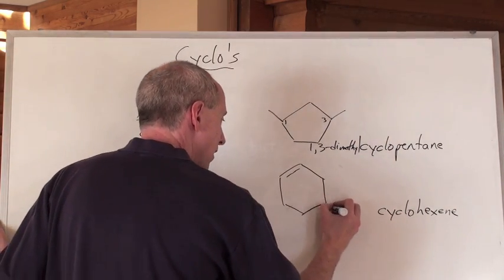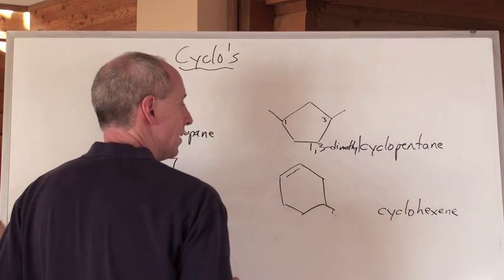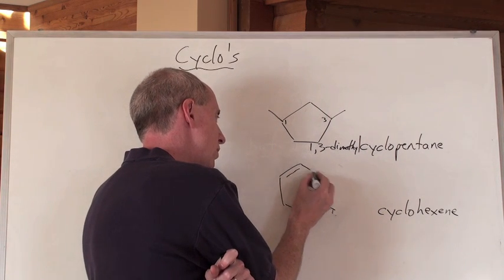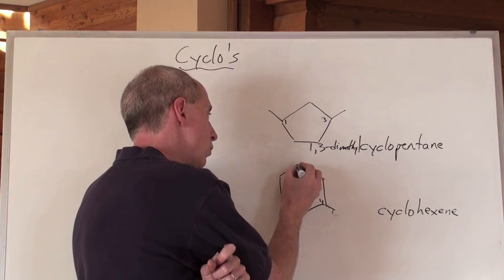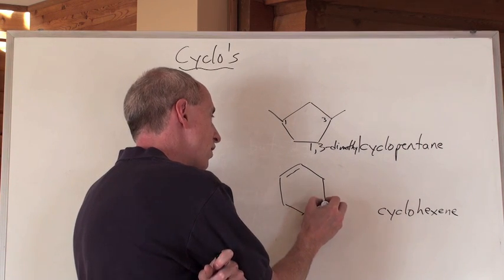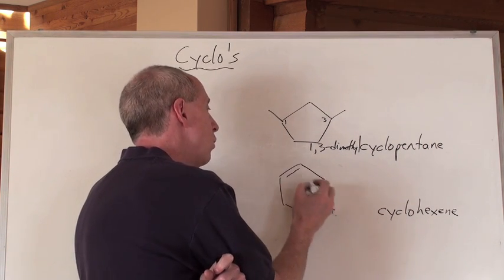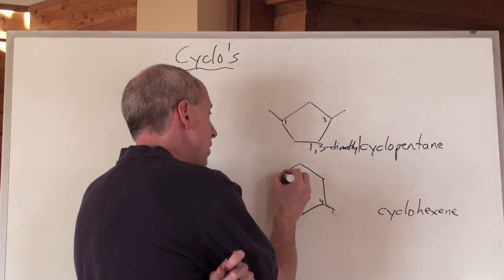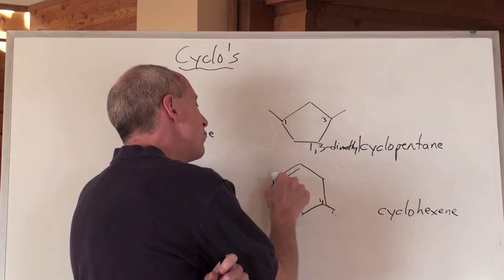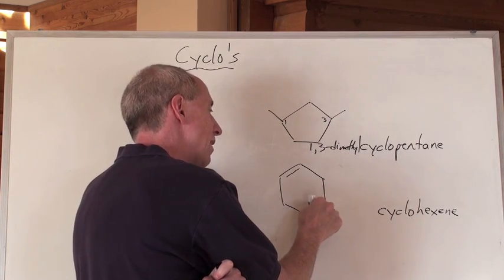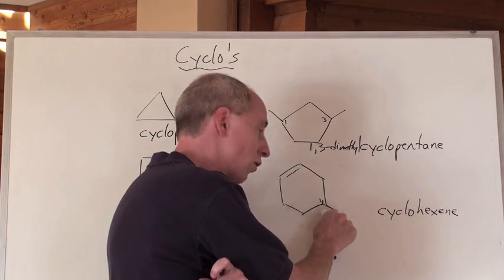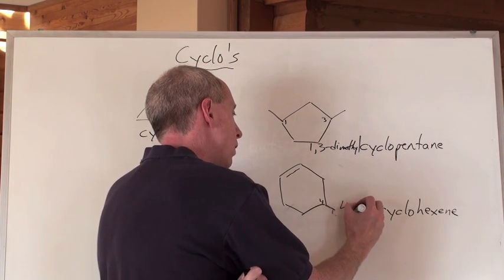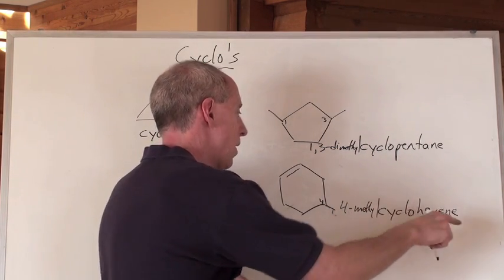If that had a branch coming off of it, now what's that going to be? If that's the one and the two, then that's the three, that's the fourth carbon. The double bond has to be between the one and the two, so you go that way for the lowest number. Remember, the multiple bond takes precedence over the branch. So that's one, two, three, four — that would be 4-methylcyclohexene.